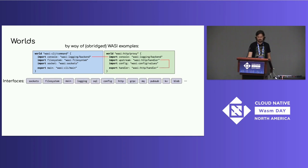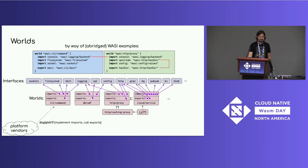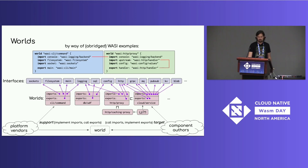In general, we're going to have bunches of interfaces growing over time, and worlds select subsets of these interfaces that are imported or exported in a certain context. You can imagine worlds like a database user-defined function, a cloud service world, and more. And because worlds are set-like, we can say things like the HTTP proxy world is included in the cloud service world, or define an HTTP caching proxy world that extends an HTTP proxy with a cache, and define unions and intersections on worlds. A platform vendor supports a world by implementing its imports and calling its exports; a component author targets a world by calling its imports and implementing its exports. Thus, a world is a higher-order interface that sits between platform vendors and component authors.